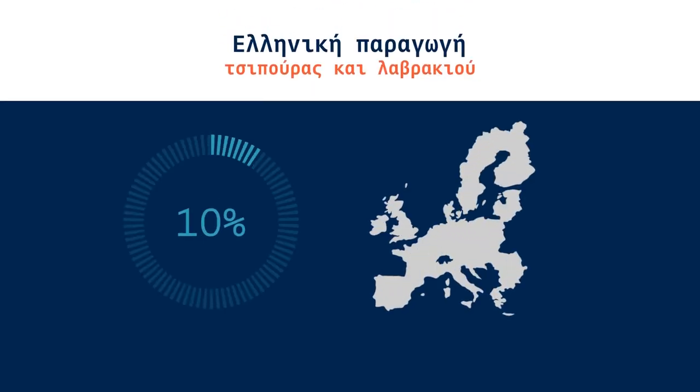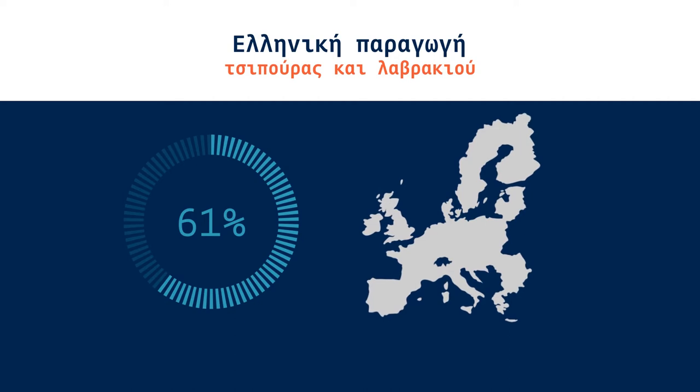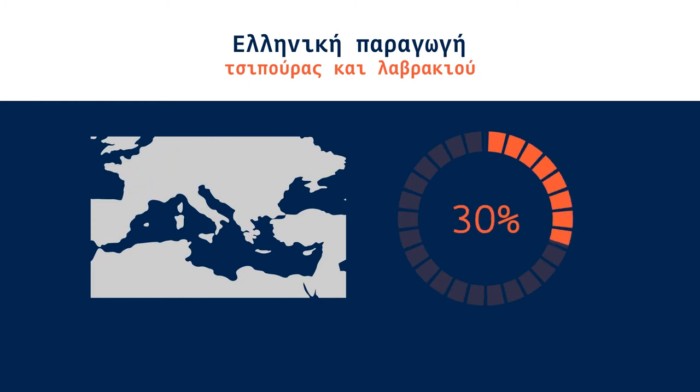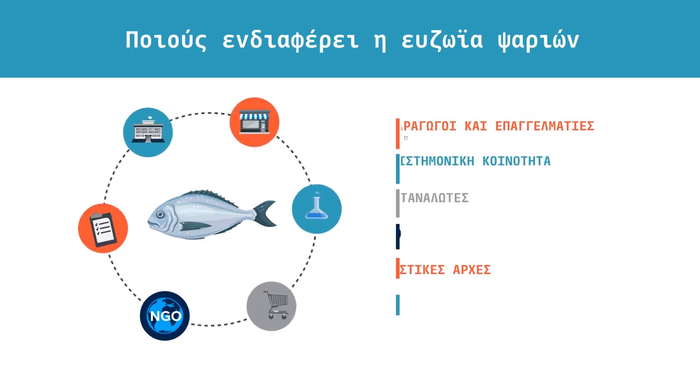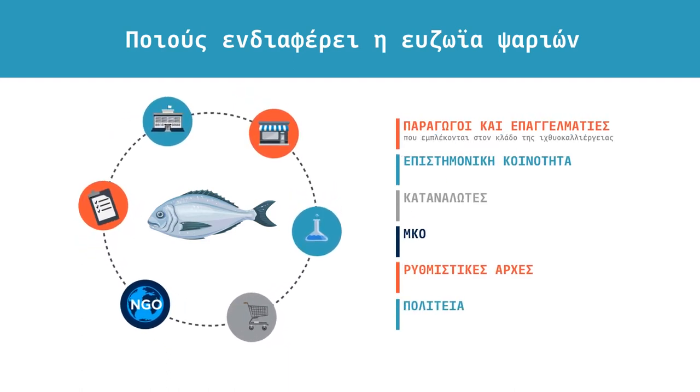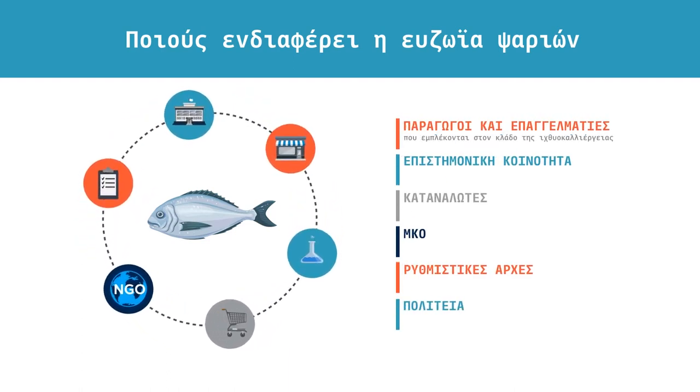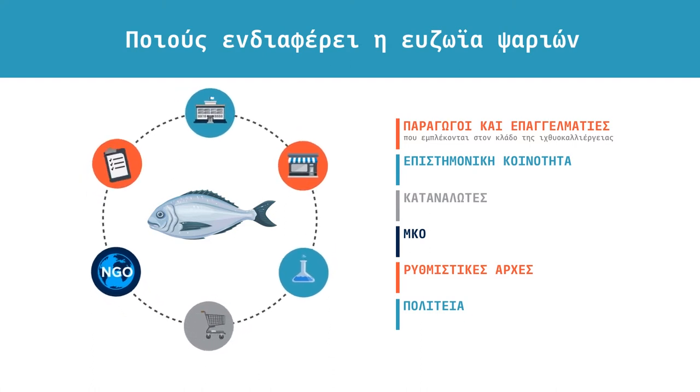Greek production represents 61% of the EU gilt-head sea bream and European sea bass catch, and almost 30% of international production sold in more than 32 countries. Fish welfare is a major priority, both for the producers and professionals involved in the aquaculture sector, as well as for the scientific community, consumers, NGOs, regulatory authorities and the state.